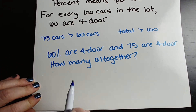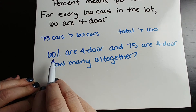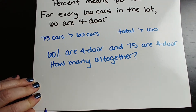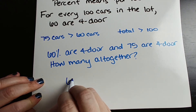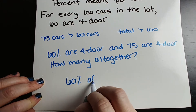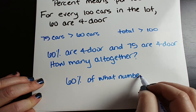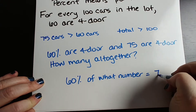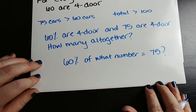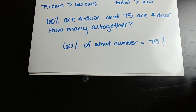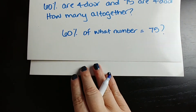We know 60% means 60 over 100, or 60 per every 100. And we know there are 75 actual 4-door cars. So we want to know: 60% of what total equals 75? We know we have 75, and we know 60% of them are 4-door — so we just want to know 60% of what number is 75.